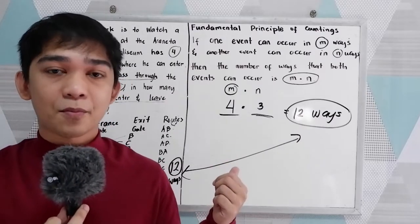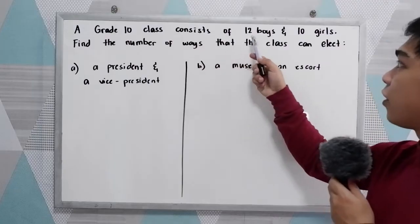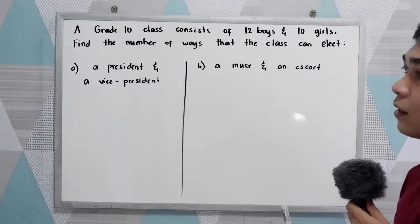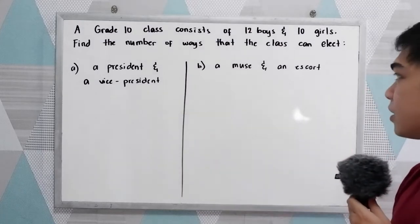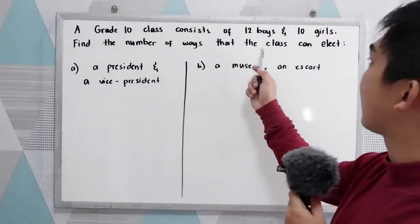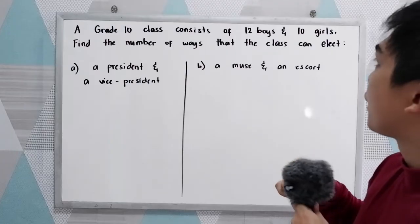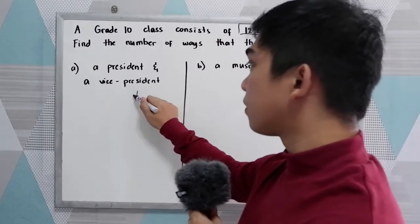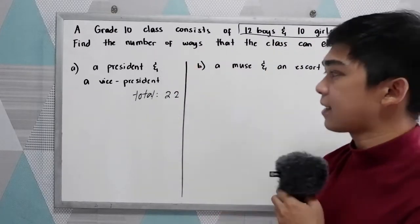Now let's have another example. A graduating class consists of 12 boys and 10 girls. Find the number of ways that the class can elect: letter A, a president and a vice president; letter B, a muse and an escort. For letter A, we have 12 boys and 10 girls — a total of 22 students in the class.